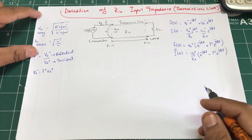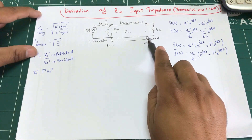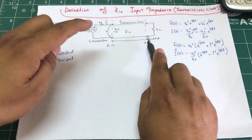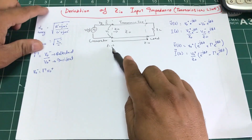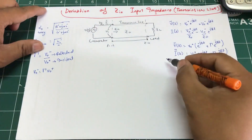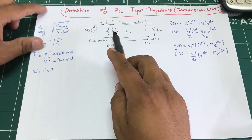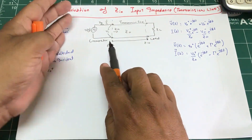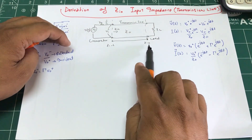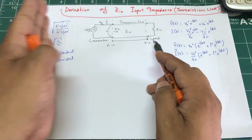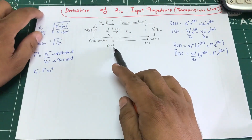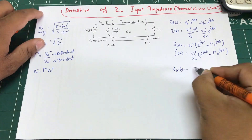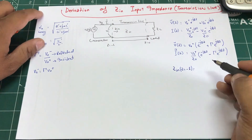When we derived the characteristic impedance, the load was connected at z = 0. Any point behind that is a negative value, so the generator is located at z = −L. I'm going to evaluate the voltage and current equations at z = −L to find Z_in.